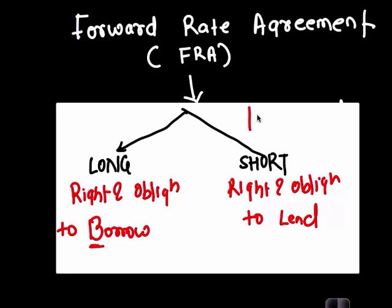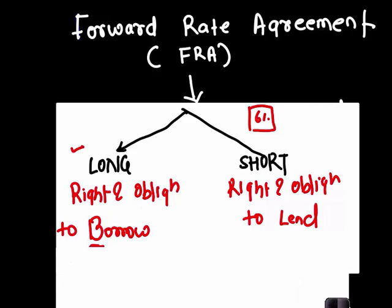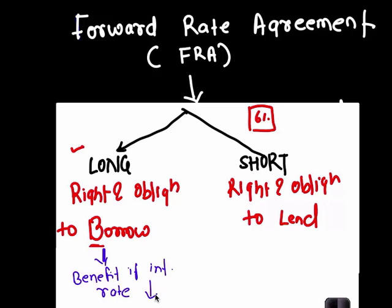Let's say you have entered into an agreement giving you a right and obligation to borrow at 6%. Now, will you want the interest rate to increase or decrease? You have signed an agreement which allows you to borrow at 6% — you would want interest rates to increase, because then you get to borrow at a rate lesser than the rate in the market. So a long will benefit if interest rates increase.